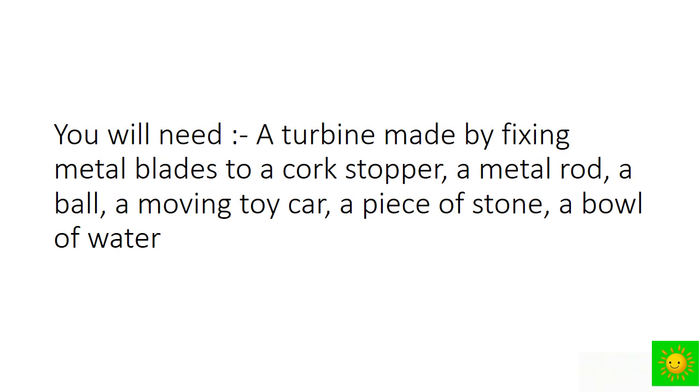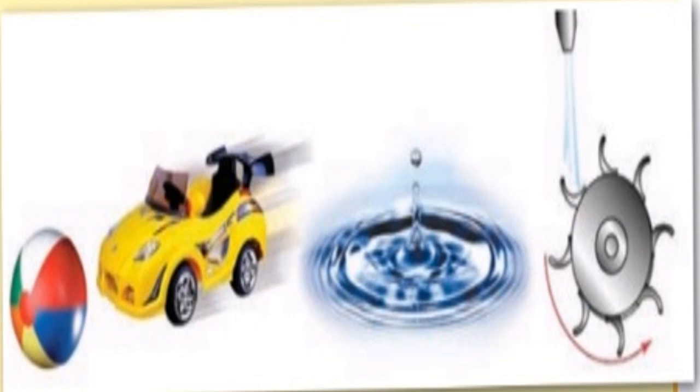You can do a small practical using these things. What do you have to do? Hold the turbine under an open water tap, keep the ball on the table and send a toy car towards it, drop the piece of stone into the still water, and lead a discussion about your observation. You may have observed that some work is done in each of these activities. You also see from where the energy was obtained for the work done.